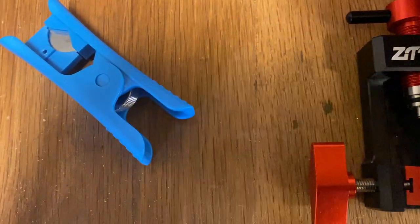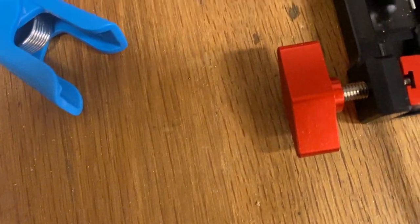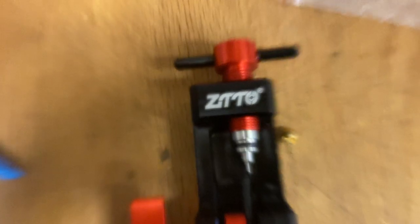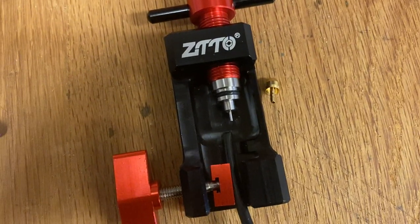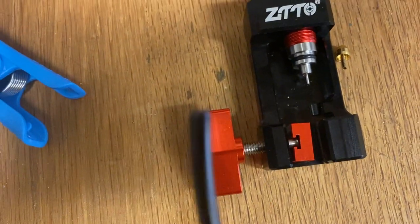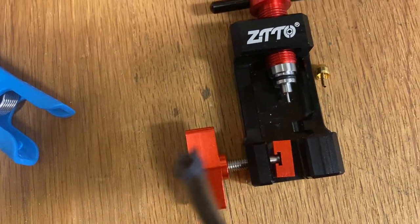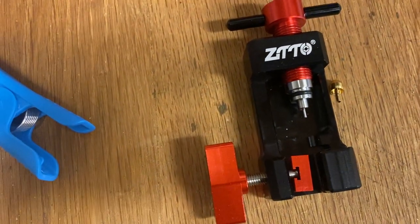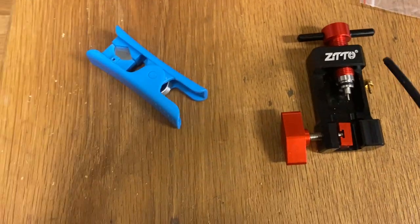So once that's on there and then that's clipped into here, you then wind that down and it seats the olive right on top nice and tight. So you're not bashing it with a hammer while it's slipping all over the place. Excellent tool.